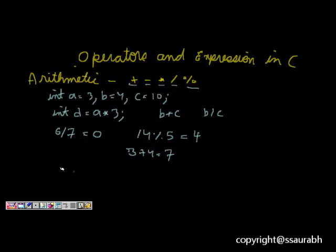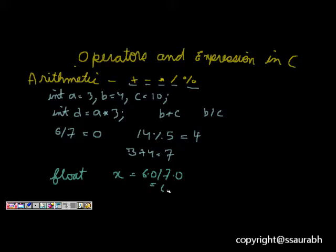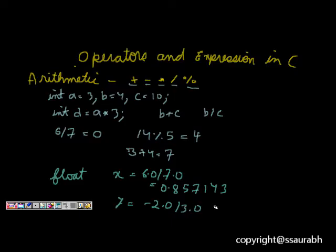If the two numbers are floats, we look at float arithmetic. If x = 6.0 / 7.0, this becomes 0.857143. Similarly, y = -2.0 / 3.0 becomes -0.6666667. This is real arithmetic.